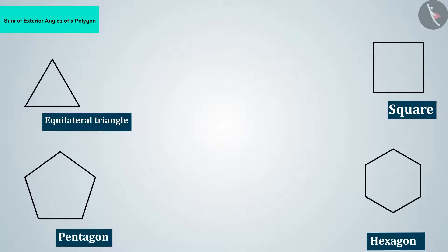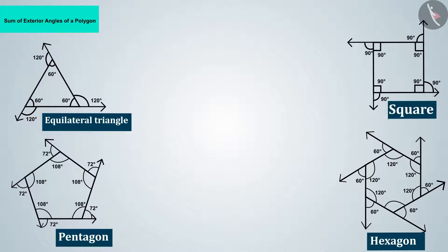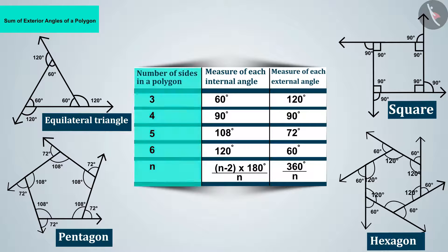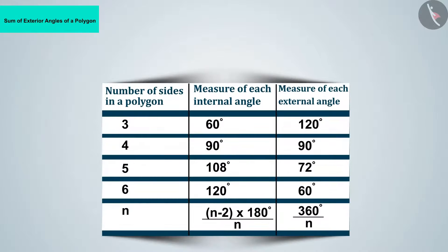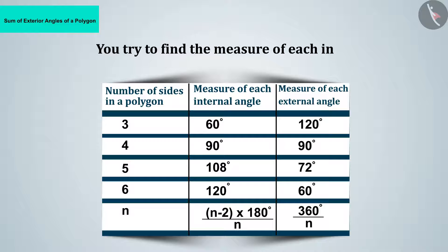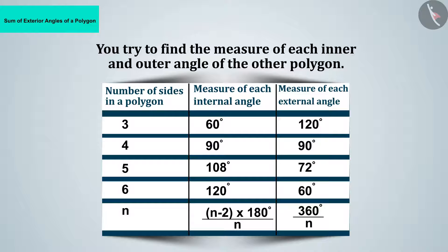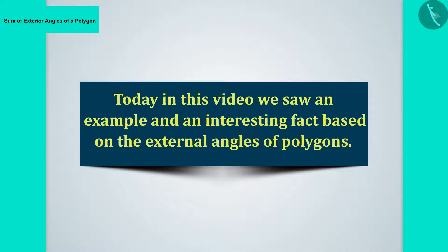An interesting fact: as the number of sides in a polygon increases, the measurement of each internal angle increases, but the measurement of each external angle decreases. We can confirm this using the formulas for interior and exterior angles of polygons. Try to find the measure of each inner and outer angle for other polygons.